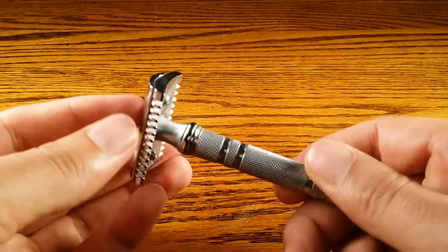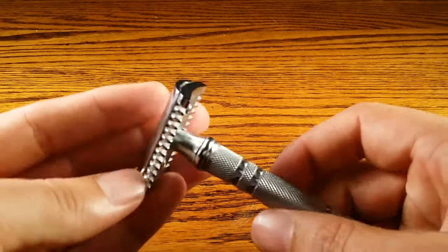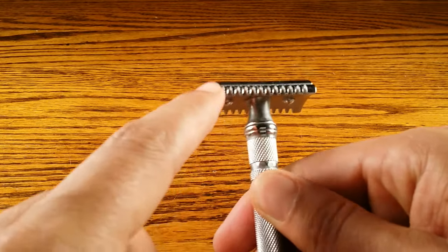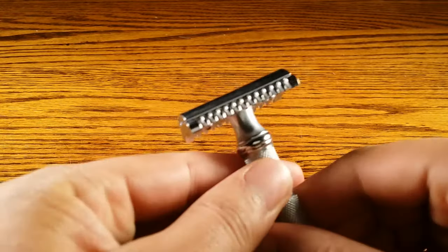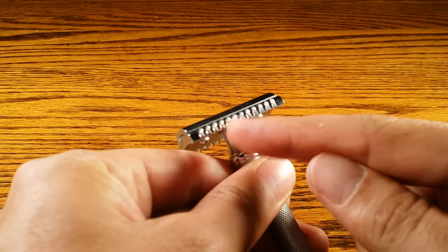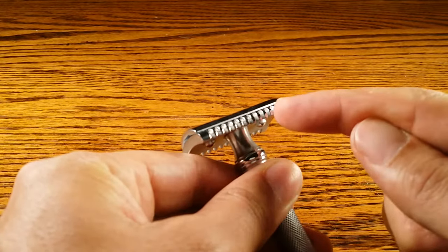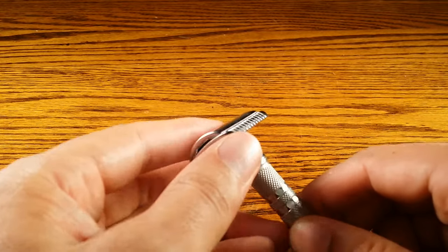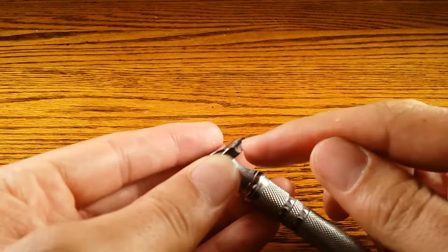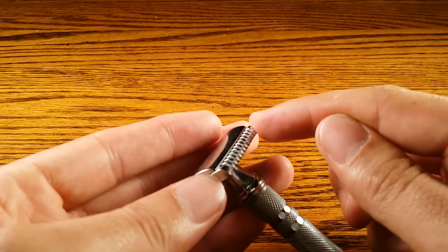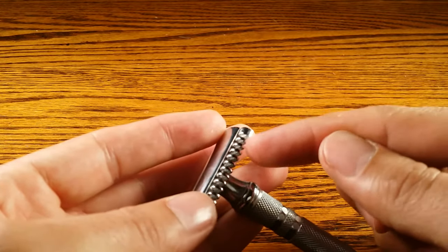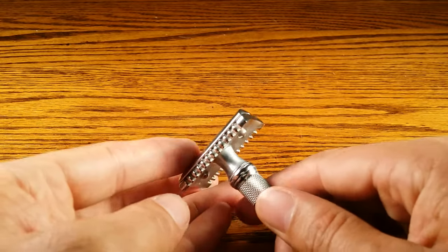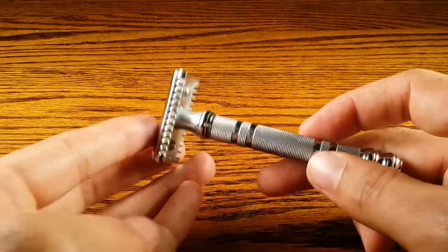So let's talk about how aggressive this puppy is. Pretty much any open comb safety razor, and obviously that's what this means is that there's grooves within the safety bar right here on the head of the razor. That just means that more pressure is going to be applied to the blade as opposed to the safety bar by having these grooves cut in there. So typically, in pretty much every case, open comb safety razors are more aggressive.